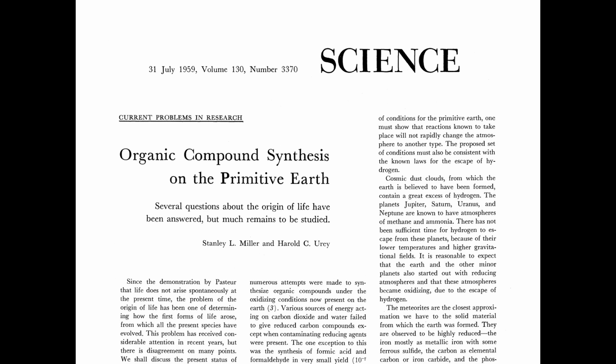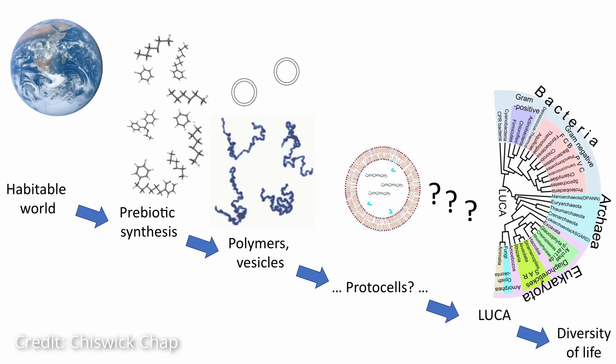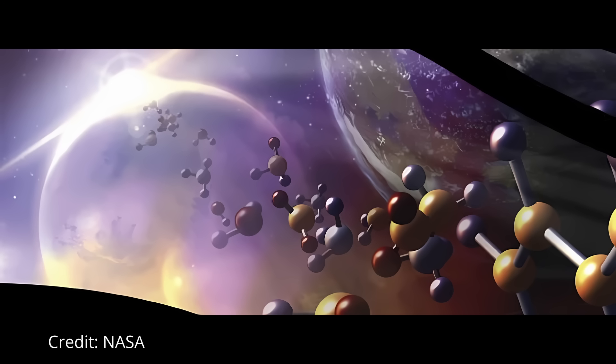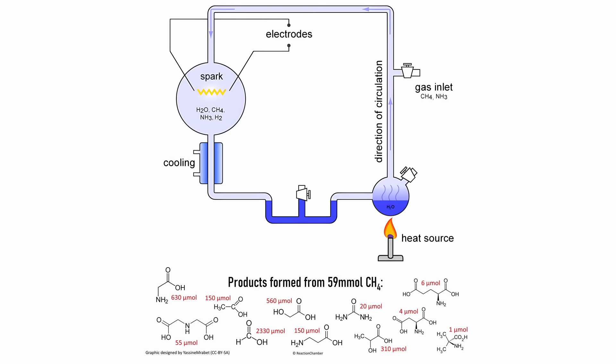Despite these controversies and debate, Stanley Miller's work had a significant and lasting impact on the field of abiogenesis and the studies of the origin of life. It provided experimental evidence that the basic building blocks of life could potentially form under certain conditions, opening the door to further research. Over the years, subsequent research and discoveries have built upon Miller's pioneering work. And while some details of the experiments were debated, its fundamental message—the formation of organic molecules under plausible early Earth conditions is feasible—remains a foundational concept in the study of life's origin.